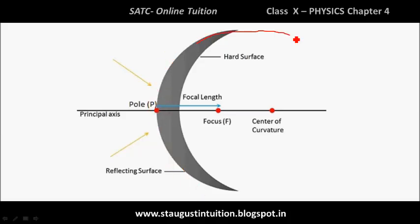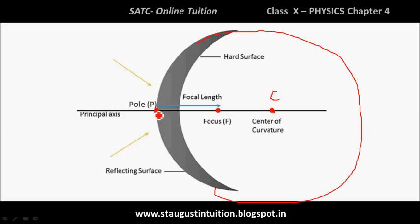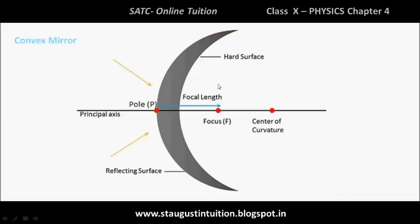For the convex mirror, we have the circle shape with the center C, pole P, focus F, and focal length marked accordingly. These are the key reference points for describing the convex mirror. The basic difference between the two is in the direction of curvature.